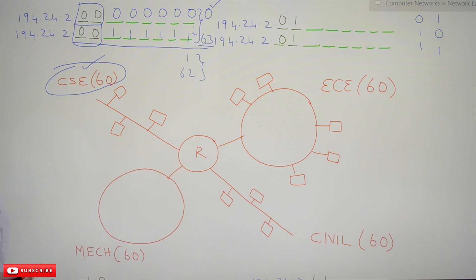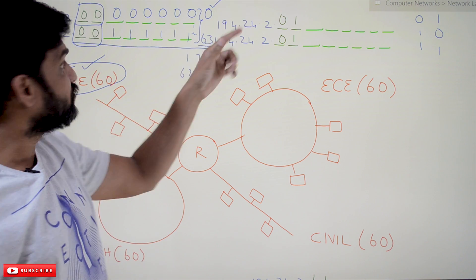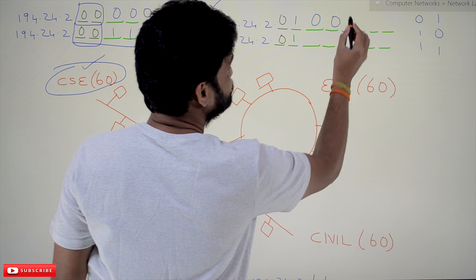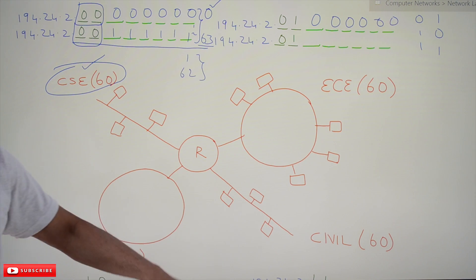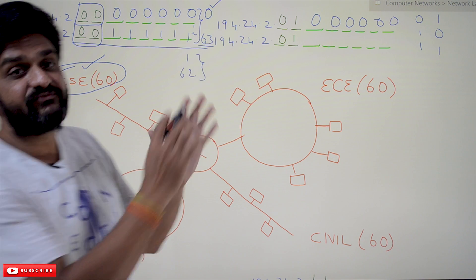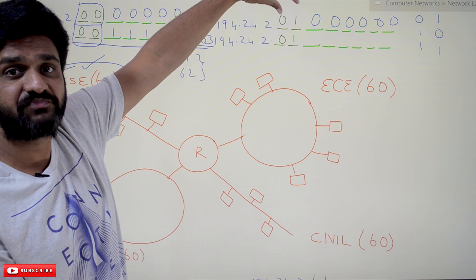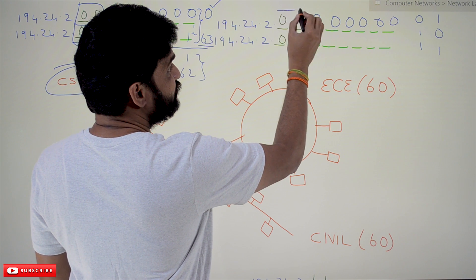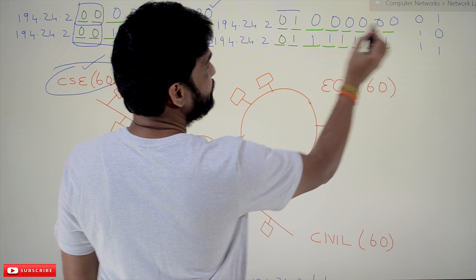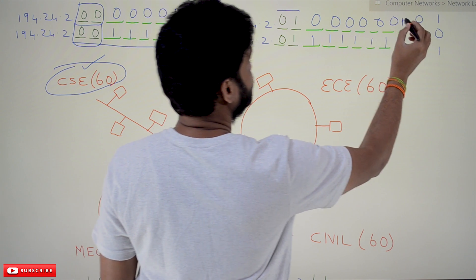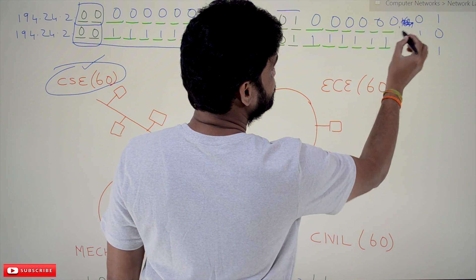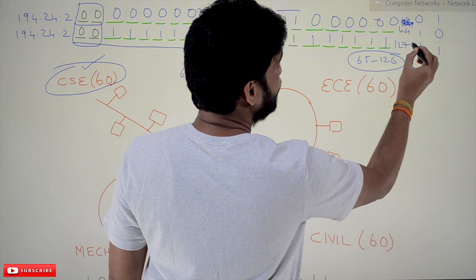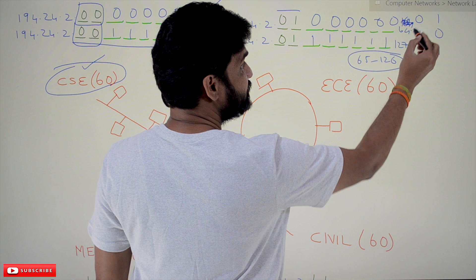The second subnet has subnet number 01. After 63 (all ones in six bits with subnet 00), the next number with subnet code 01 starts at 64 — that is, 01 followed by six zeros. The last address in this range, with six ones, is 127. So the ECE subnet covers 194.24.2.64 to 194.24.2.127, with .64 as the network ID, .127 as the directed broadcast, and .65 to .126 as usable hosts.